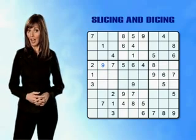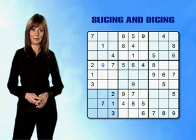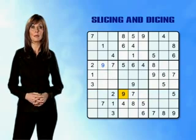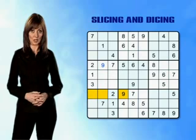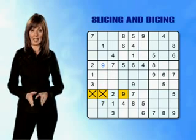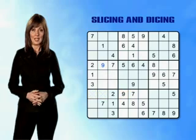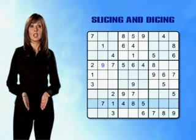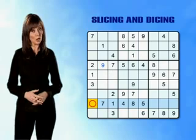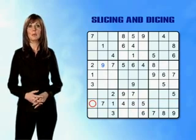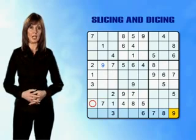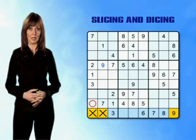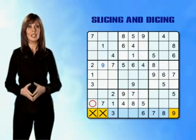We can now try and place a 9 in the bottom-left mini-grid. Slicing through row 7, we find there's a 9 already in column 4, which means the two empty boxes in row 7 of the bottom-left mini-grid cannot contain a 9. Slicing through row 8, we can see that the row doesn't contain any other 9s, which makes the empty box in column 1 a possibility. Moving on to slice through row 9, we find a 9 has already been placed in column 9, which eliminates the two empty boxes in row 9, as you can only ever have one 9 in each row.